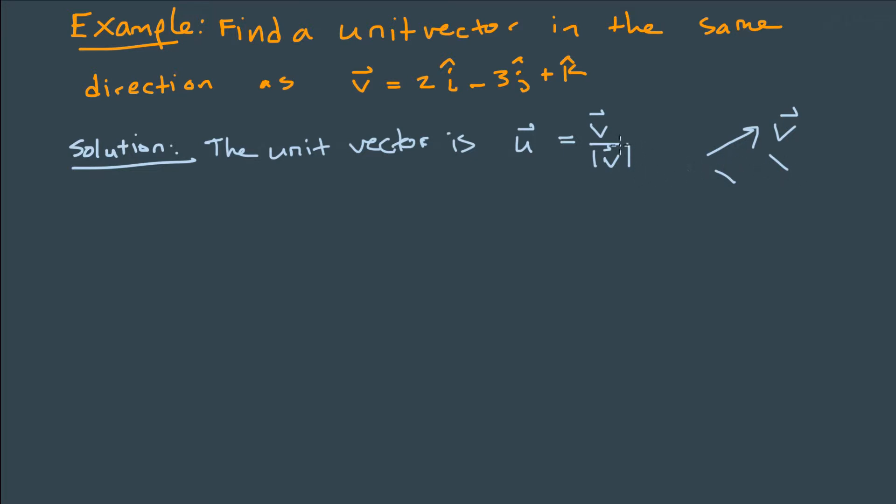So multiplying a vector, in this case by a non-negative constant, like 1 over magnitude of v, will just change the length of v. And this specific constant, actually whenever we take the magnitude of this new vector, it will turn out to have magnitude of 1.